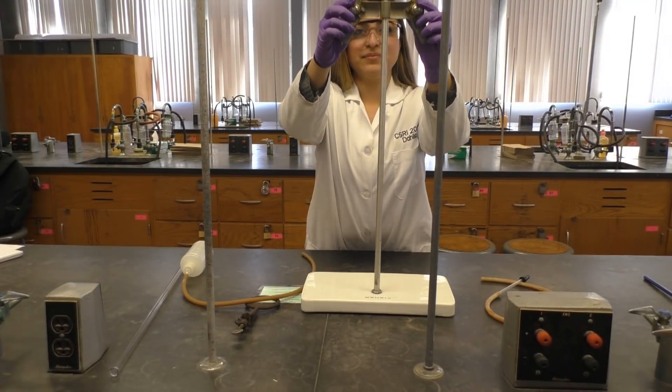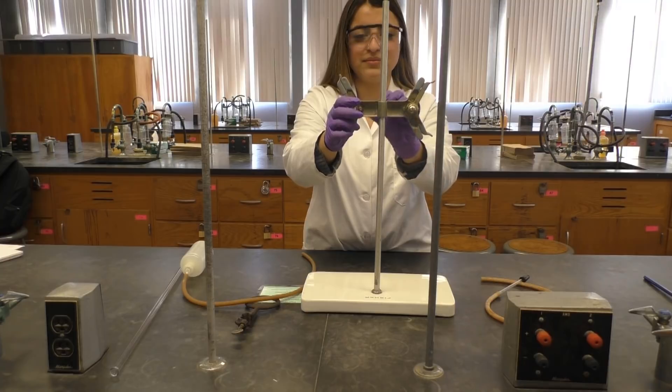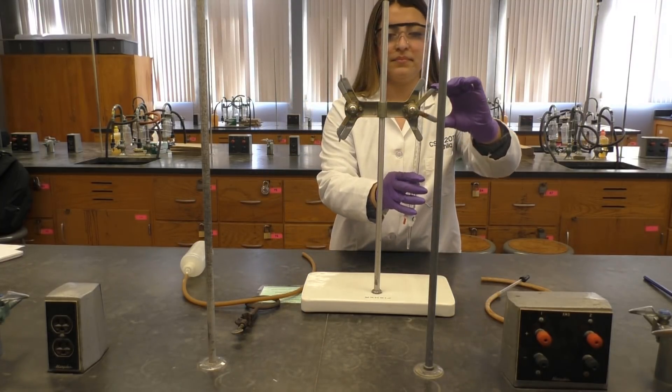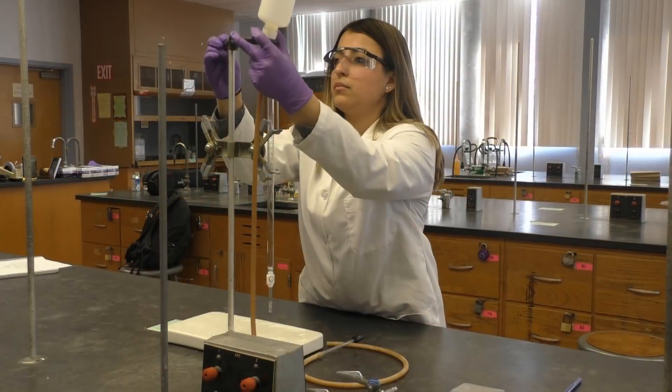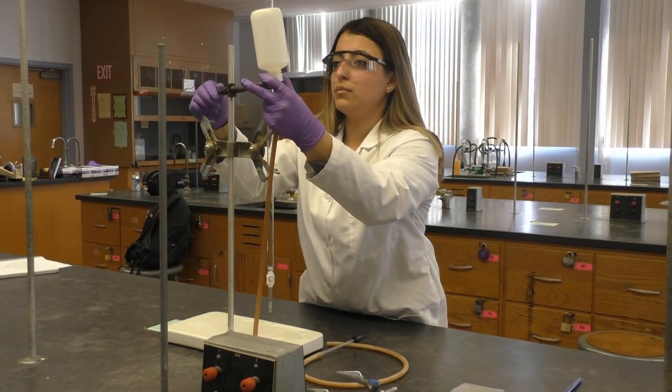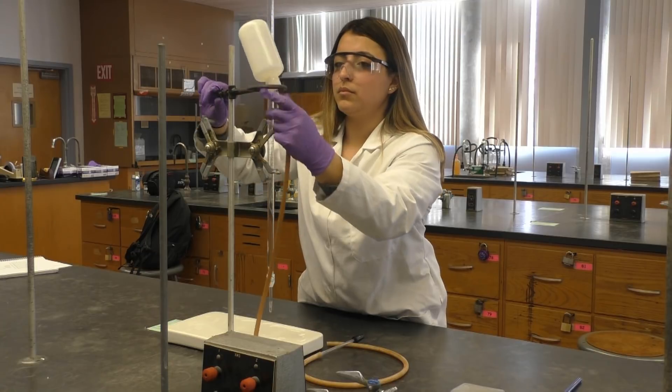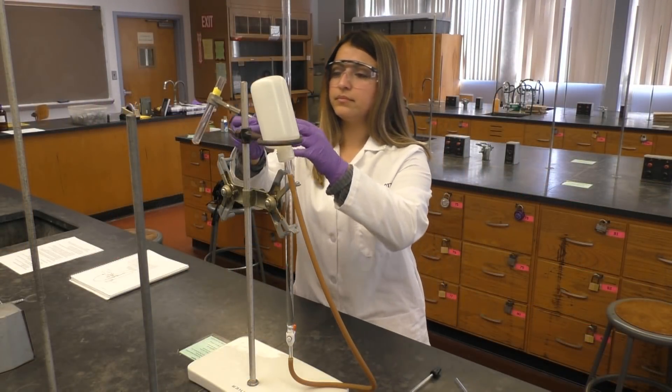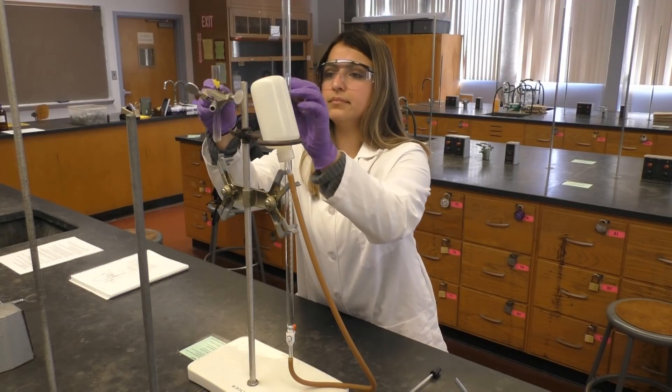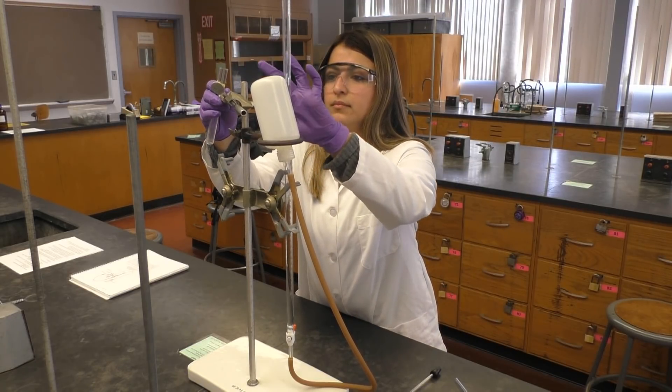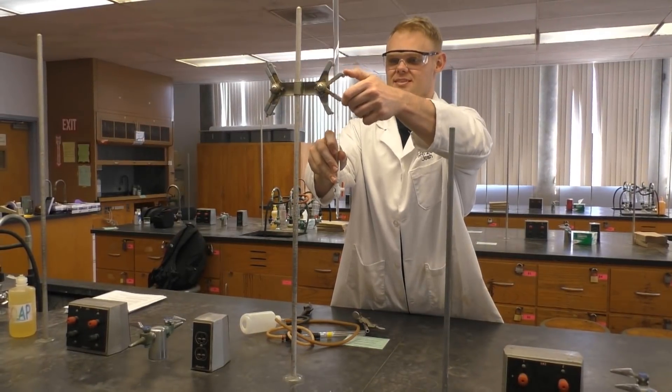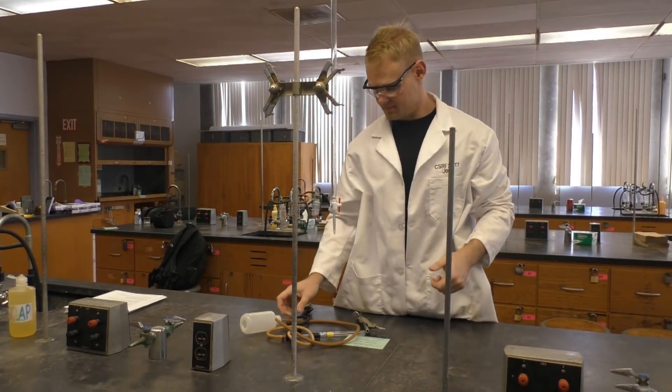First, clamp your burette holder to the burette stand. Then clamp your burette to the burette holder. Next, clamp your leveling bulb to the pole, then clamp your large test tube to the pole. Additionally, instead of a burette stand, you can also use the poles in the middle of the lab bench.